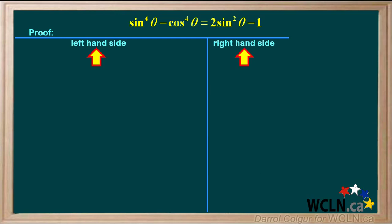We'll set up a table for our proof. The expression on the left side is sine to the fourth theta minus cos to the fourth theta and the expression on the right side is two sine squared theta minus one.